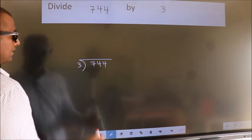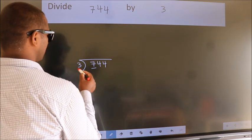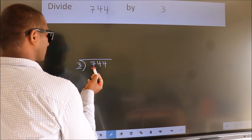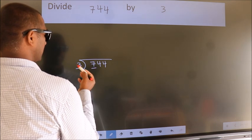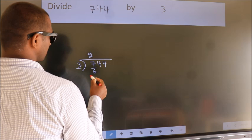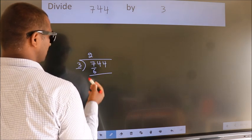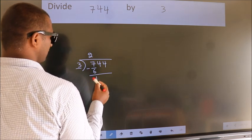Next. Here we have 7, here 3. A number close to 7 in 3 table is 3 times 2 equals 6. Now, we should subtract. We get 1.